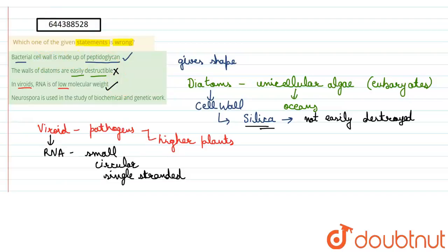Now let's see the last statement. It says that neurospora is used in study of biochemical and genetic work. This statement is again right.